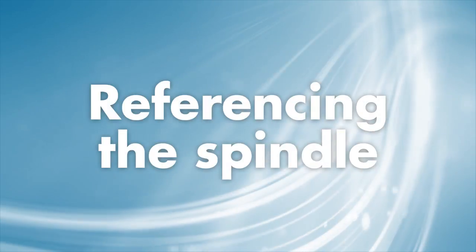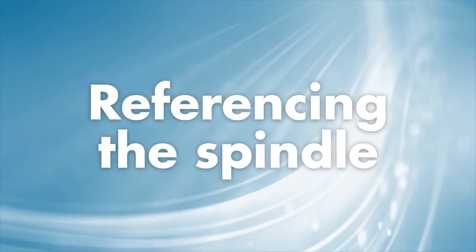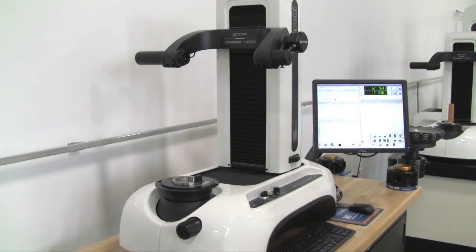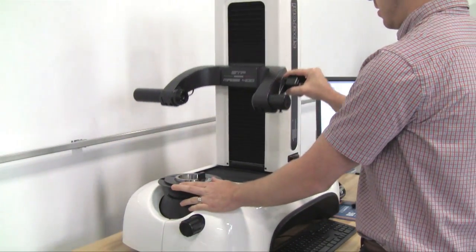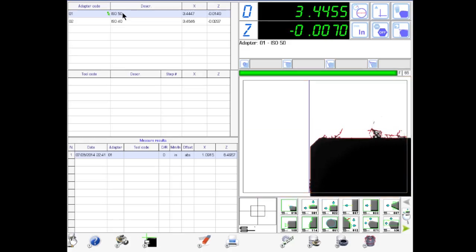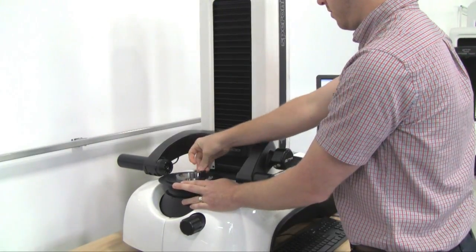Before you attempt to measure your first tool of the day, it's best practice to reference the scales to the spindle. Doing this helps ensure you receive accurate and precise measurements. First, move the vision arm down and forward towards the spindle, rotating the spindle so that the reference notch displays on the monitor. Clean off dirt and debris using cleaning putty.